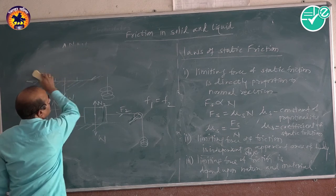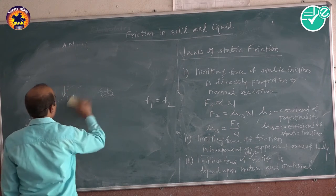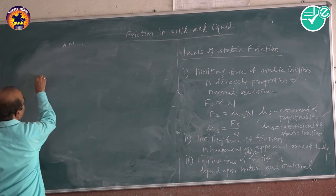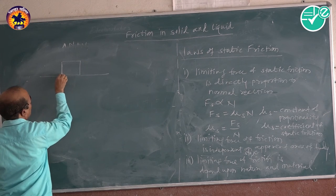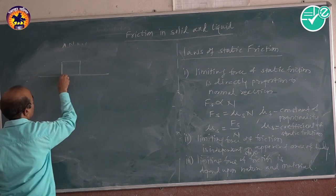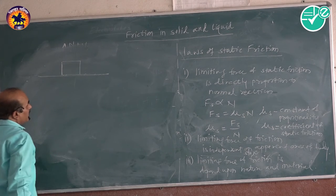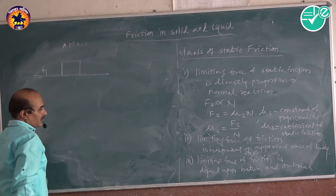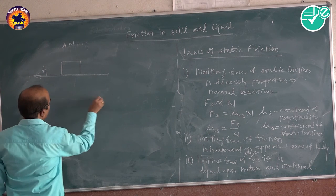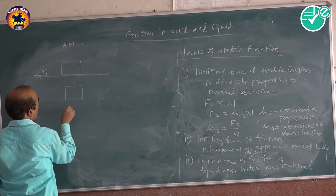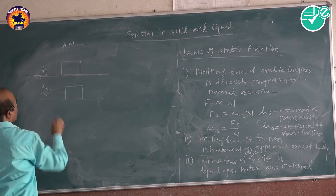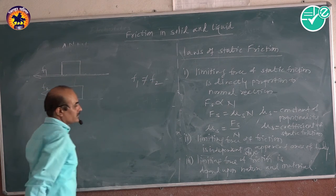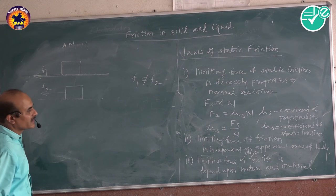We can verify this law. Consider a block kept on the tabletop — first when it is rough, we note the force of friction as F1. In the second condition, the block is kept on a smooth surface and the force of static friction is F2. We find that F1 is not equal to F2, which means the limiting force of friction depends upon the nature of the surface.